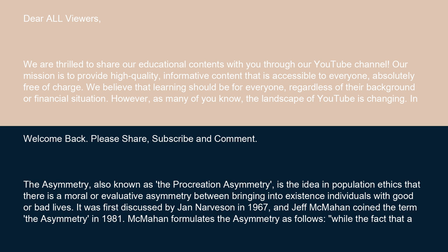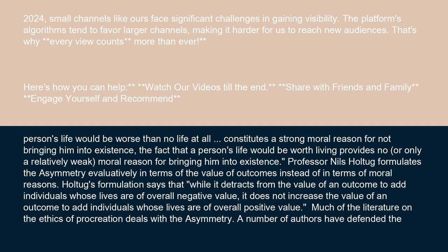It was first discussed by Jan Narvison in 1967, and Jeff McMahon coined the term 'the asymmetry' in 1981. McMahon formulates the asymmetry as follows: while the fact that a person's life would be worse than no life at all constitutes a strong moral reason for not bringing him into existence, the fact that a person's life would be worth living provides no, or only a relatively weak, moral reason for bringing him into existence.